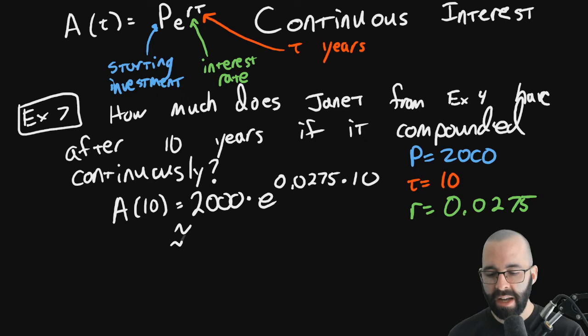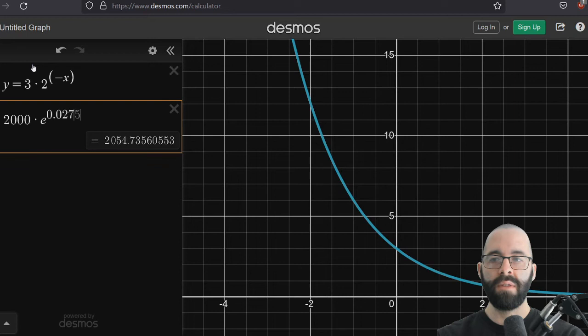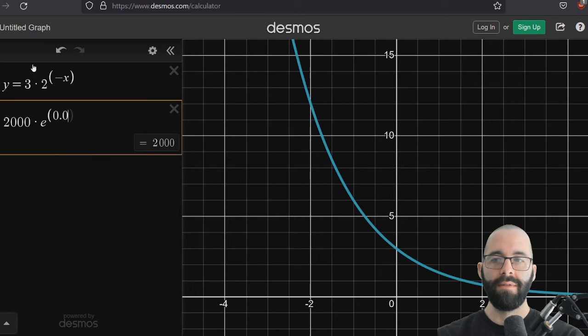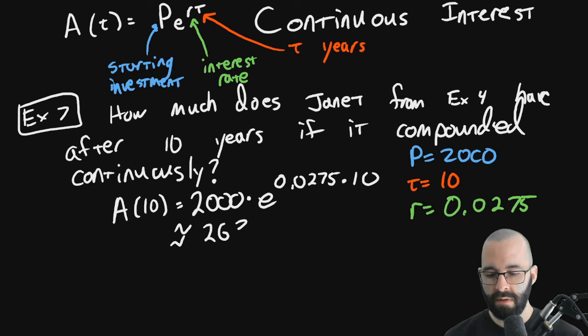Plug it into a calculator. And again, on Desmos, this is not too bad. Desmos, you can just type 2000 times E raised to 0.0275, parentheses are important, times T. I'm going to write this down, $2,633.06. And this is in dollars and cents.